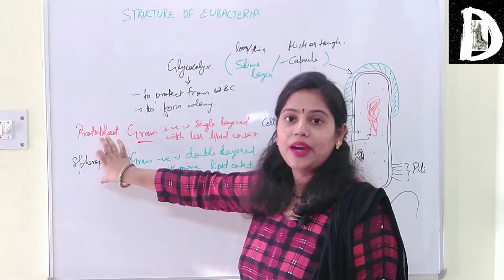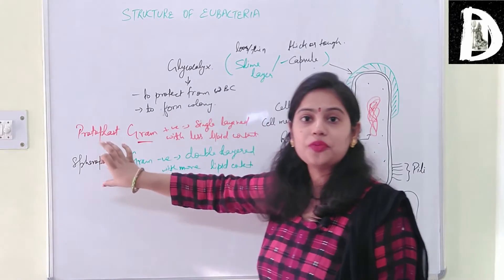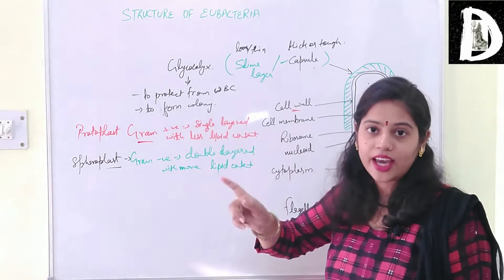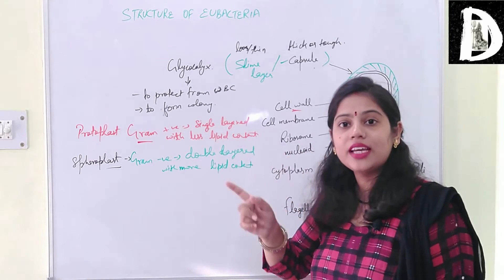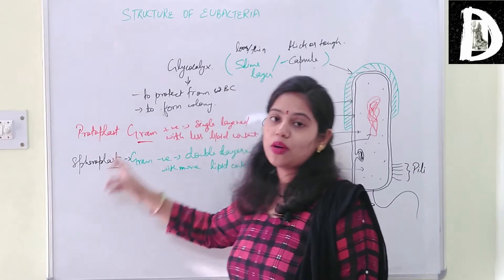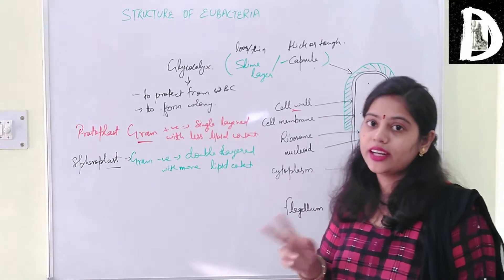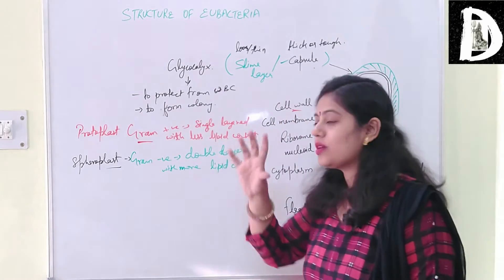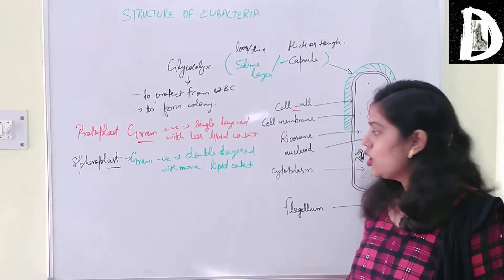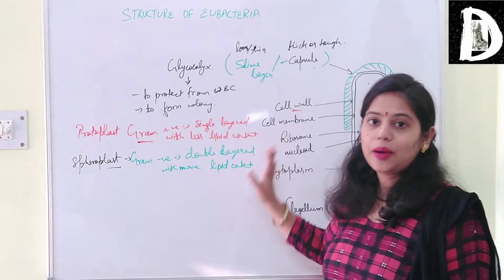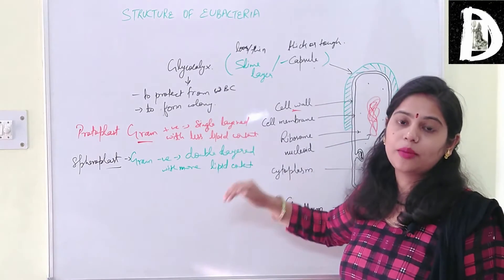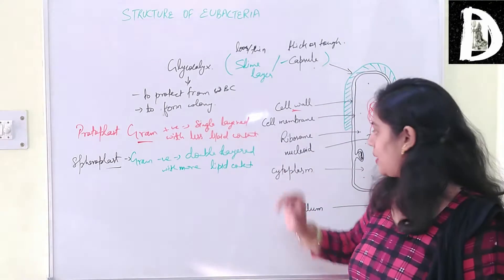So to summarize: if a gram positive bacterial cell wall is digested by the enzyme lysozyme, the result is called a protoplast. And if lysozyme is used to degrade the cell wall of gram negative bacteria, the resulting structure is called a spheroplast. The cell wall is made of peptidoglycan.